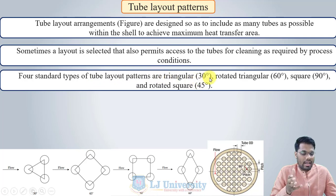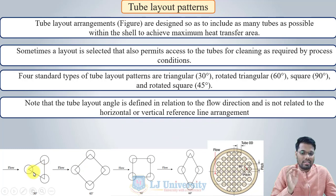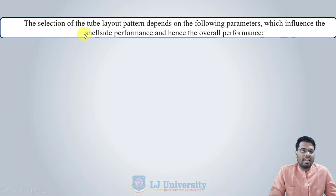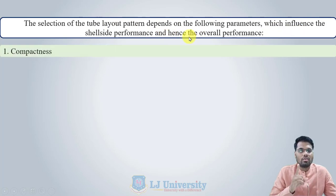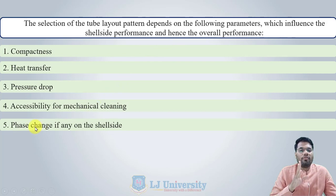The four standard types of tube layout patterns are: triangle (30°), rotated triangle (60°), square (90°), and rotated square (45°). Note that the tube layout angle is defined in relation to the flow direction, not to a horizontal or vertical reference line. The selection of tube layout pattern depends on: compactness, heat transfer rate, pressure drop, accessibility for mechanical cleaning, and phase change if any on the shell side.